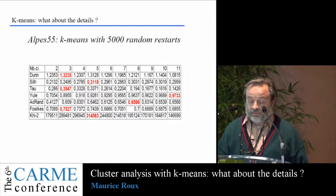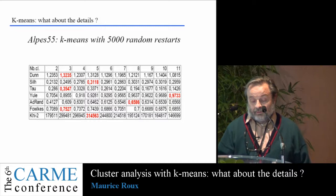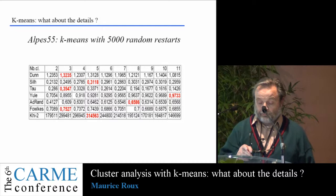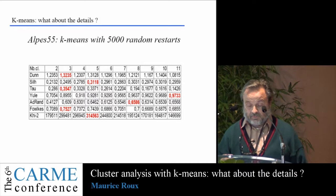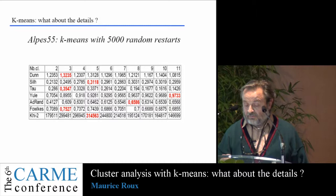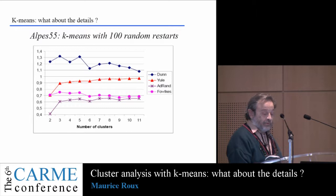Repeating the experiments with K-means with 5,000 random restarts, you can see that there is no agreement between the various indexes. But there are two numbers — namely three clusters and five clusters — which seem to be good for some indexes. Again, Yule and adjusted RAND don't give good results. The Yule coefficient is always increasing, and Folks and Mallows is always decreasing.